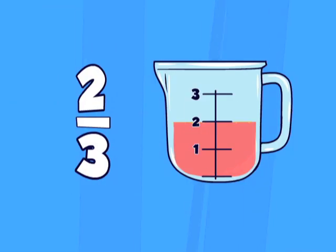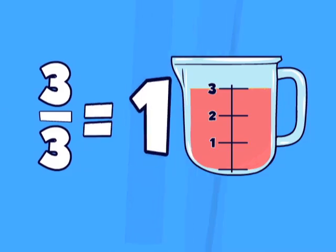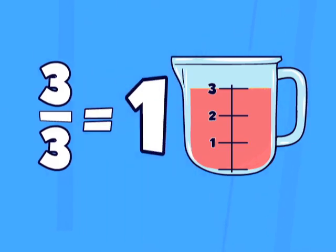If two of the three parts were filled, we would have two thirds cup. If all three parts were filled, we would have three thirds, or one whole cup.